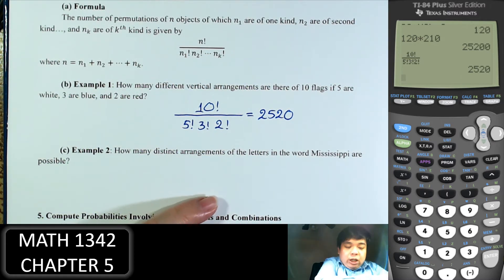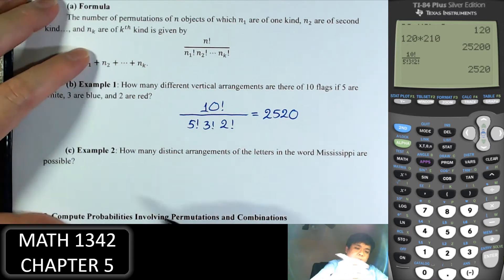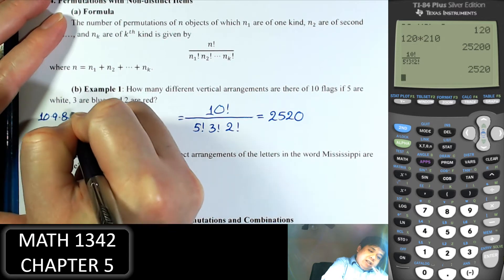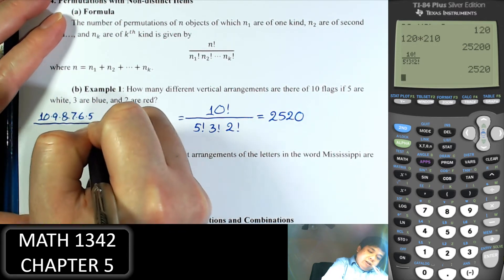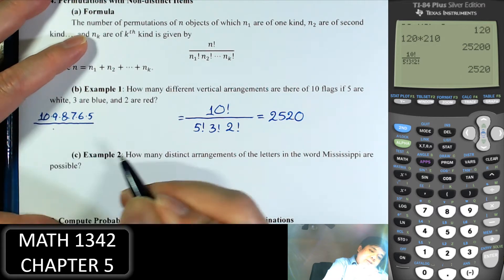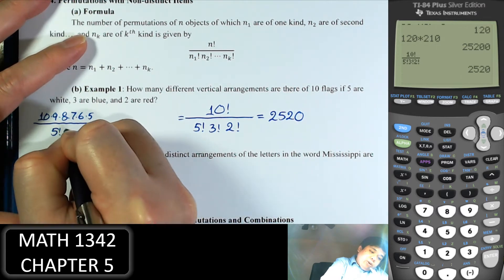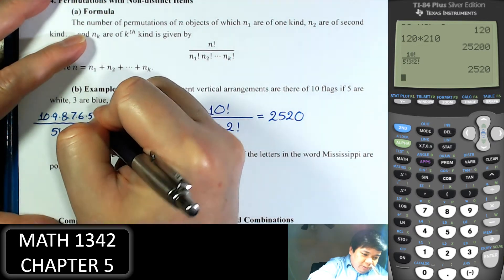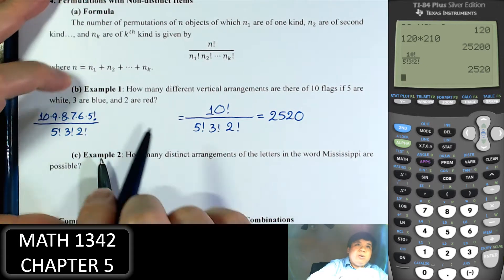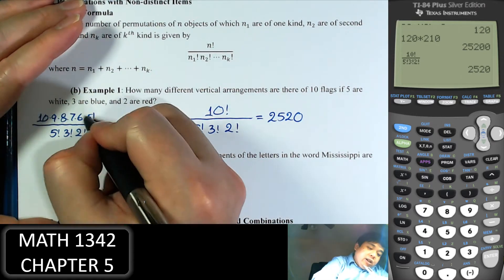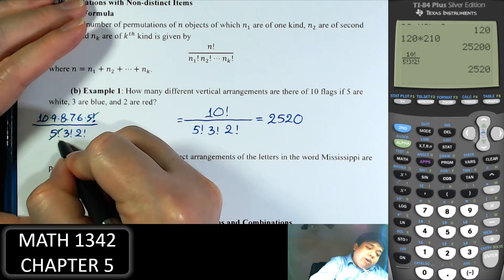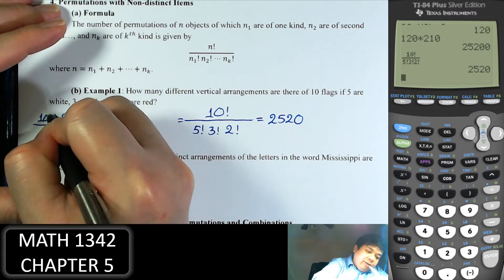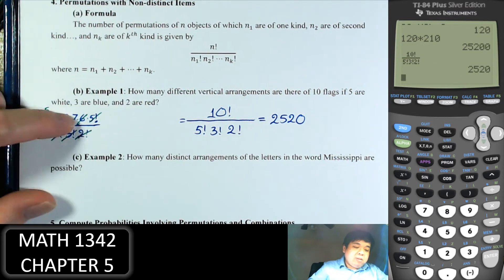So 10 total arrangements: 10 factorial divided by 5 factorial times 3 factorial times 2 factorial. That gives 2520 different ways. If we do this by hand: write out 10 times 9 times 8 times 7 times 6 and then 5 factorial over 5 factorial times 3 factorial times 2 factorial. The 5 factorials cancel. 3 factorial is 6, and 2 factorial is 2, so simplify to get 2520.